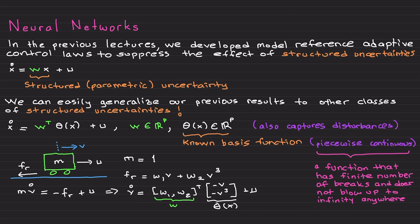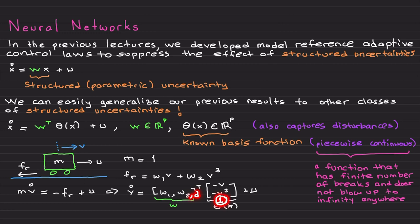We use adaptive control laws to cancel the effect of this total uncertainty. This is what I mean by structured or parametric uncertainty: you know the basis function, you just don't know the weights, which can change depending on road conditions. This formulation also captures disturbances. If you include a disturbance term in the basis function, you add a unity basis element of one — making it a three-by-one vector — and this also captures disturbances by adding a bias of one.